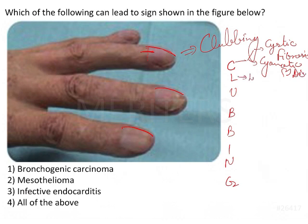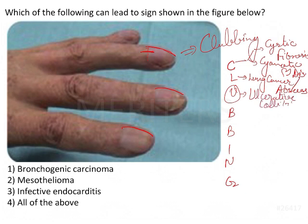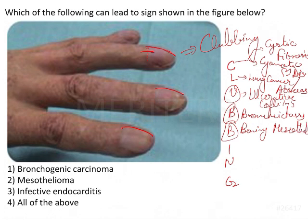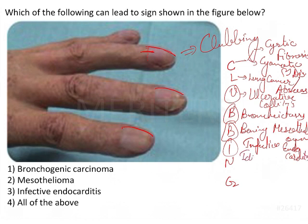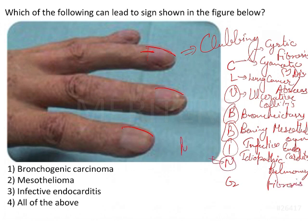L stands for lung cancer or lung abscess. U stands for ulcerative colitis. B stands for bronchiectasis or benign mesothelioma. I stands for infective endocarditis or idiopathic pulmonary fibrosis. N stands for neurogenic tumors, and G stands for gastrointestinal disease.